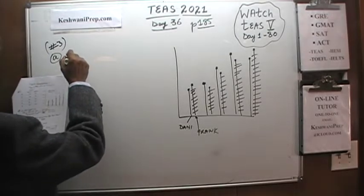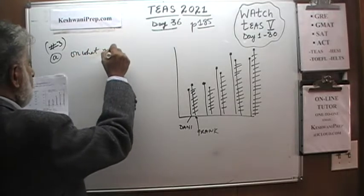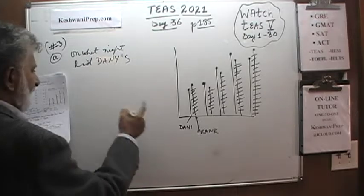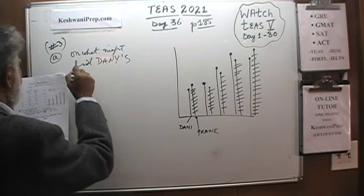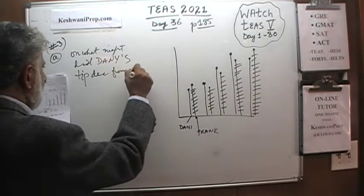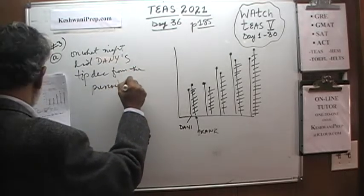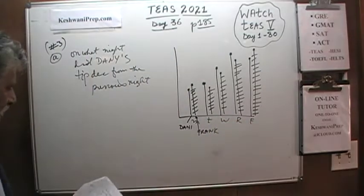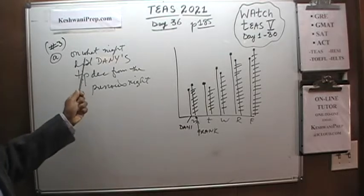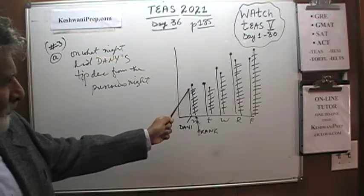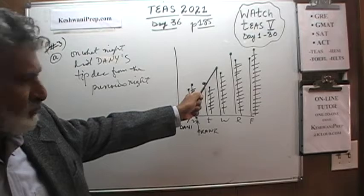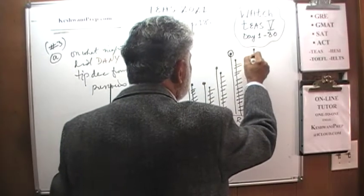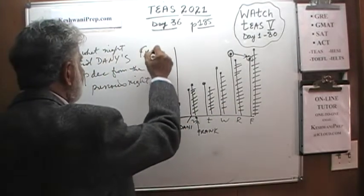Part A says: on what night did Danny's tip decrease from the previous night? These are days — Monday, Tuesday, Wednesday, Thursday, and Friday. Danny is the first line. From Monday to Tuesday his tips went up; from Tuesday to Wednesday his tip went up; from Wednesday to Thursday his tip went up. But from Thursday to Friday he has less in tips. The answer is Friday.